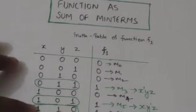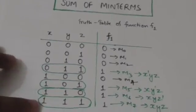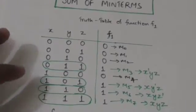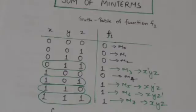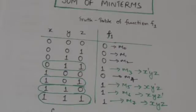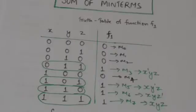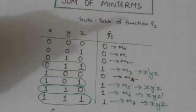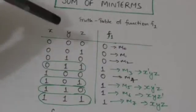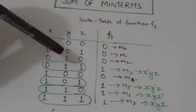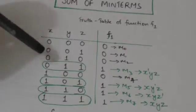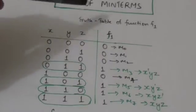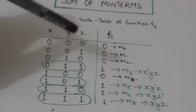Now look at this truth table of a boolean function f1. We have to represent this boolean function f1 as the sum of minterms. First of all we will check what combination of values of its binary variables — that is x, y, and z — gives the output value 1.